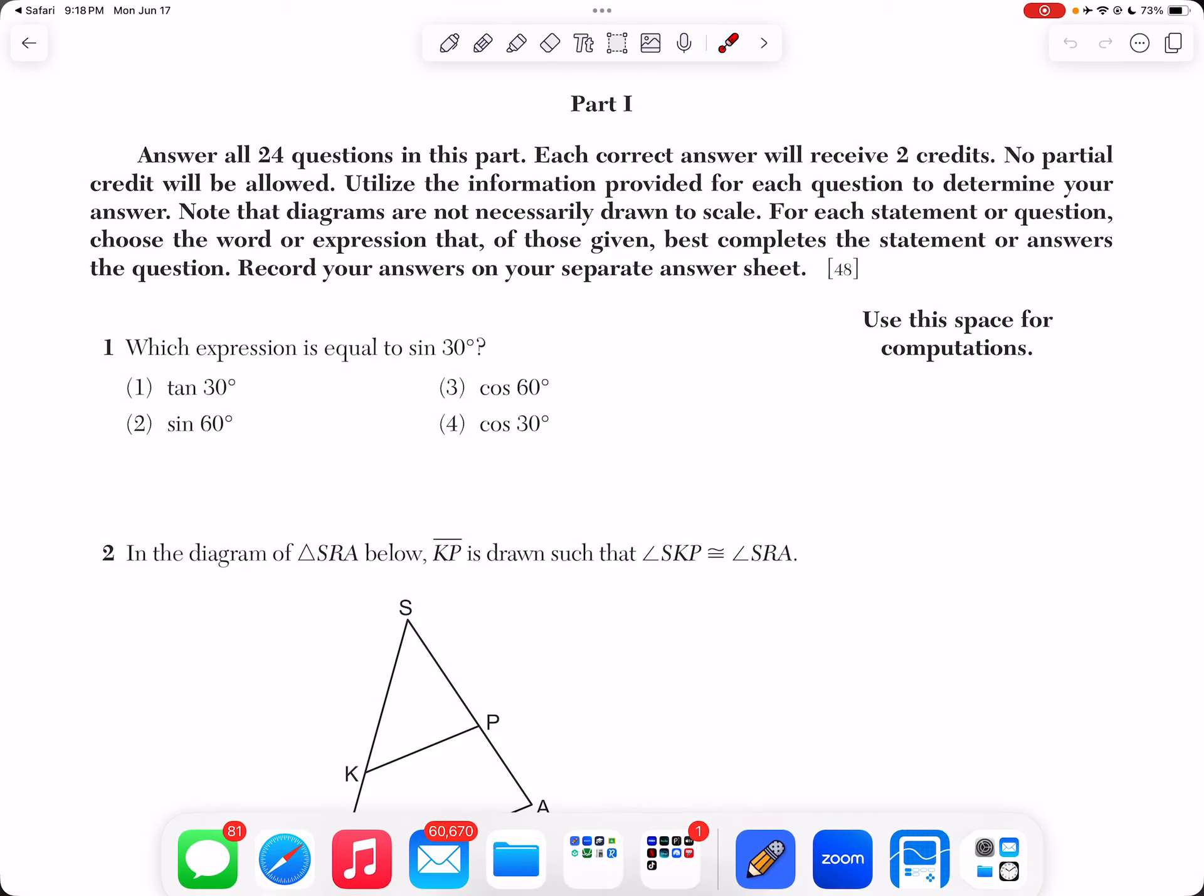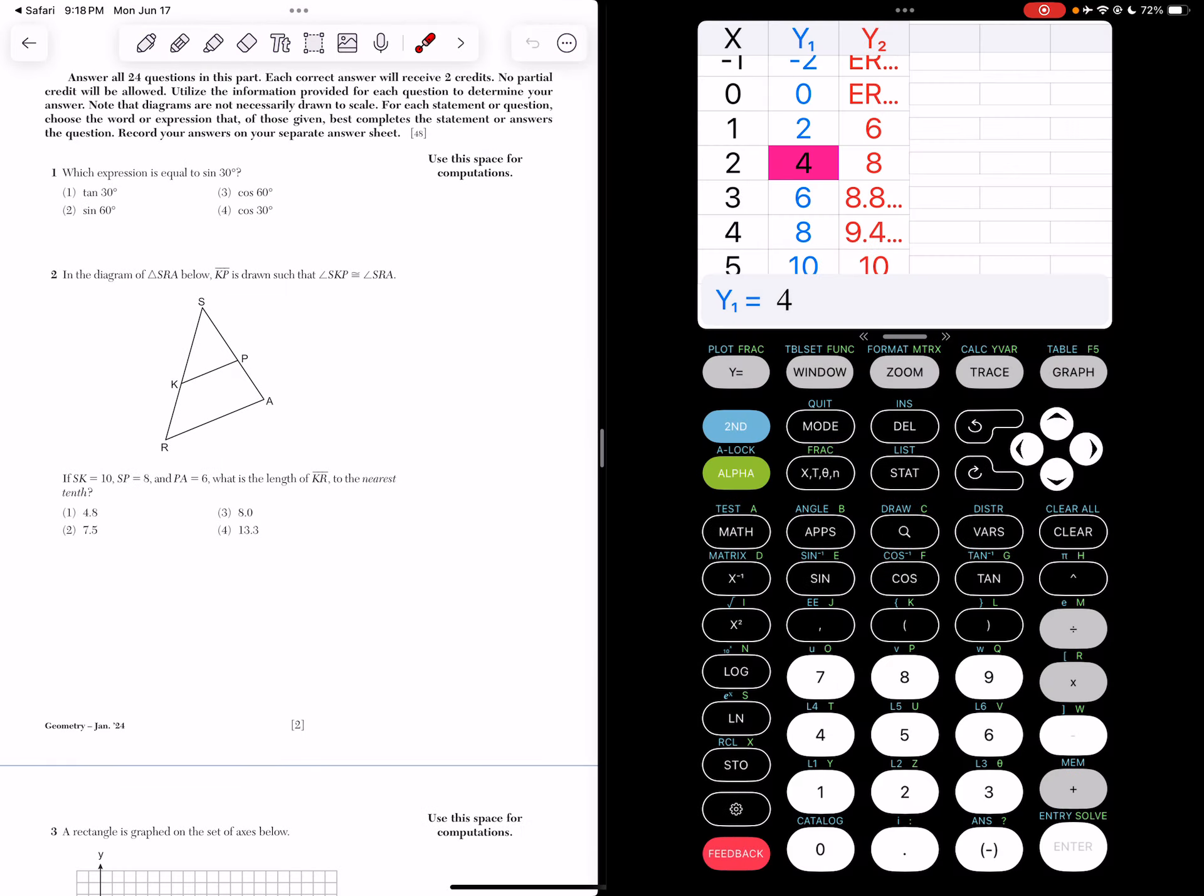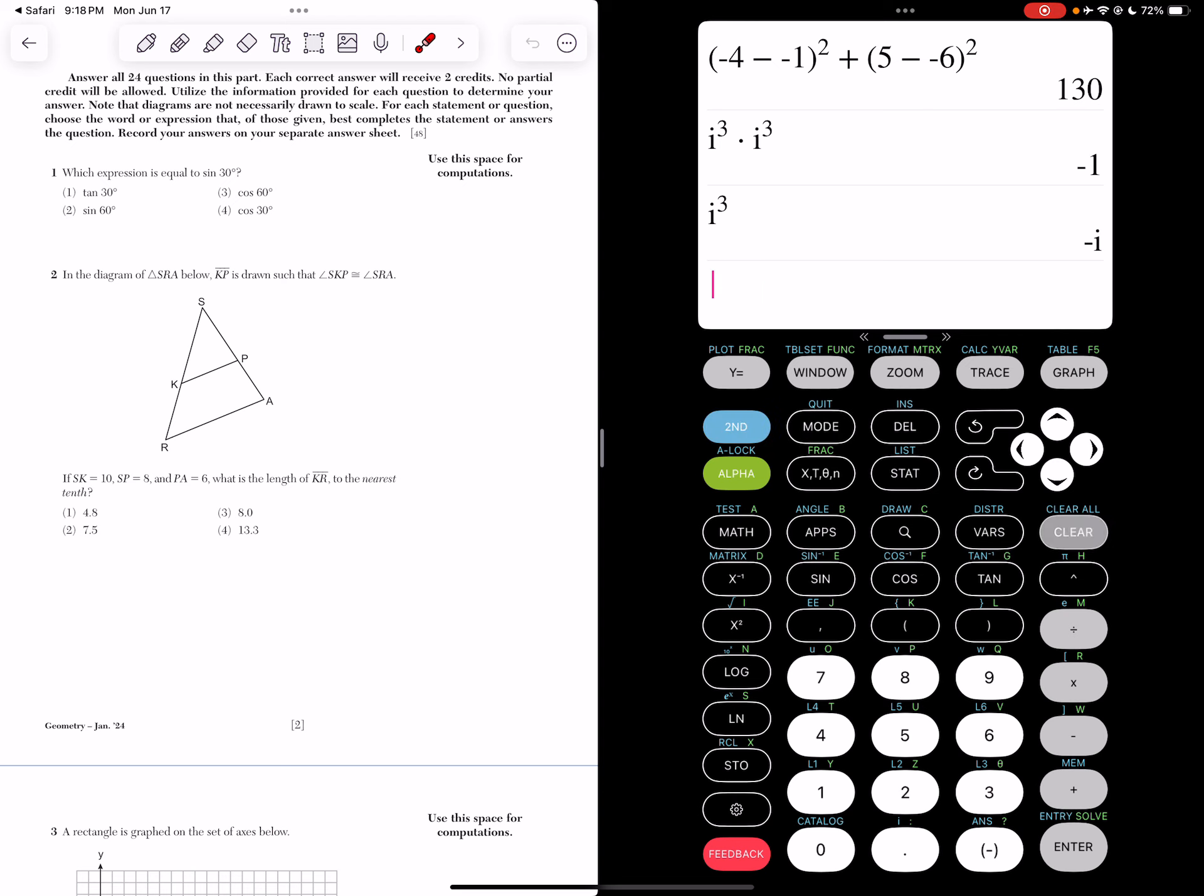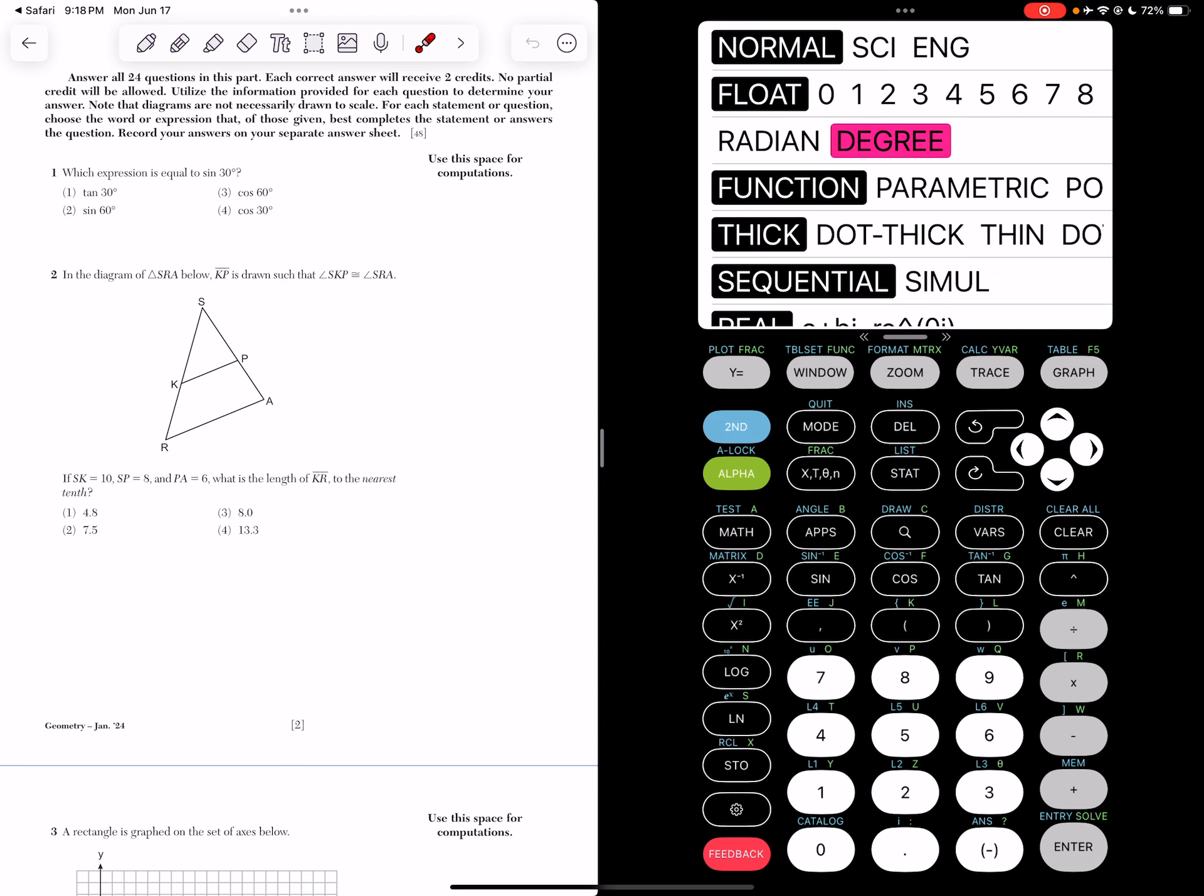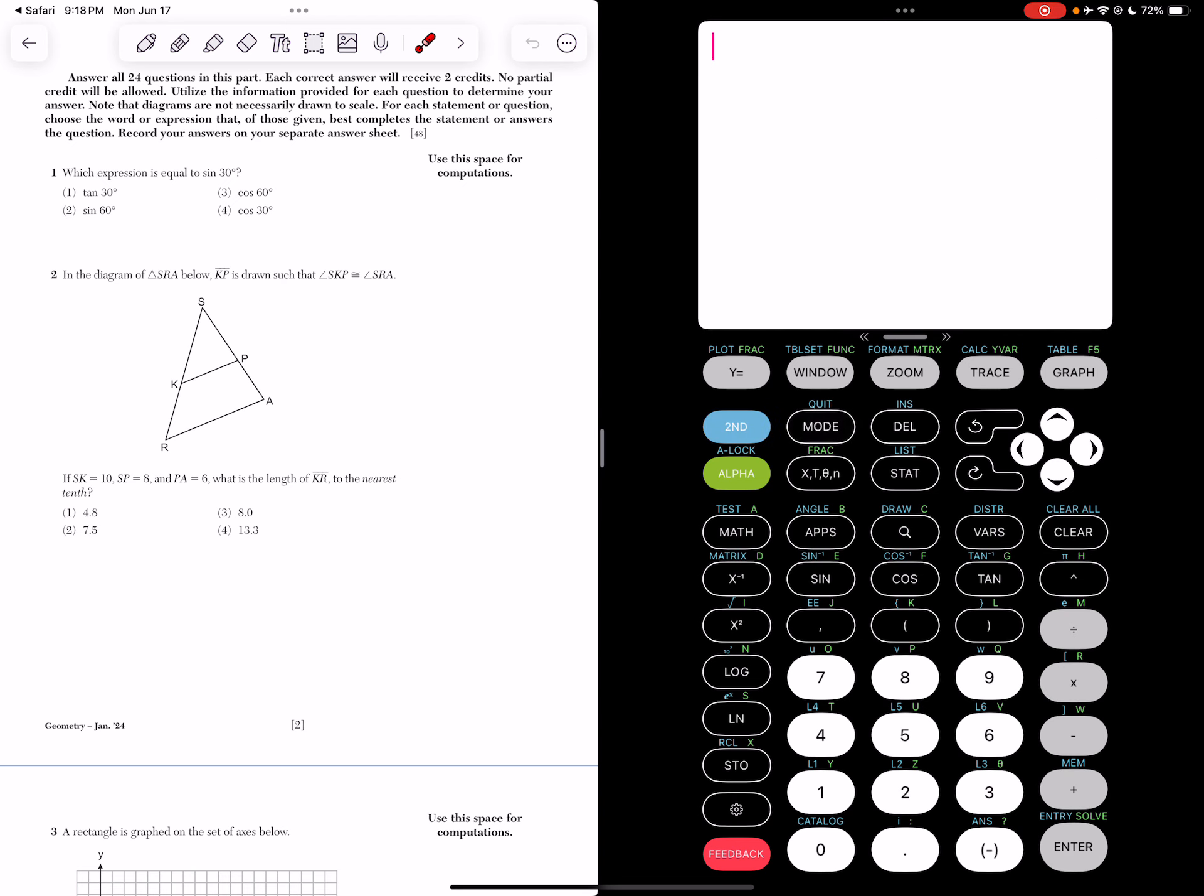You need to make sure your calculator is in degree mode for this question. So if we put our calculator in degree mode, let's see what happens. So if we do the sine of 30, that should give us 0.5.